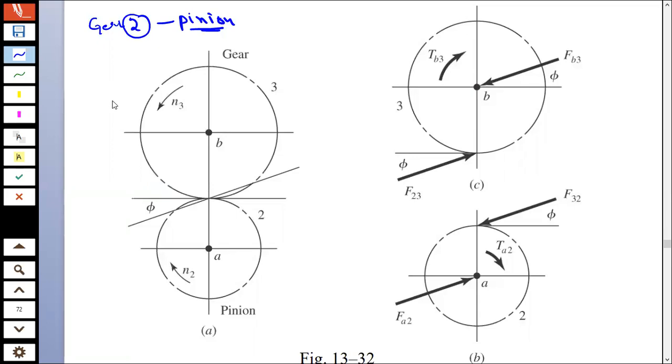Now, why do we start from two? Because one is the frame. We always start from two; the first gear is gear number two. One is the frame to which the gear train is attached. These gears are mounted on shafts.